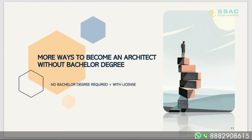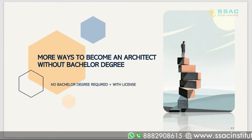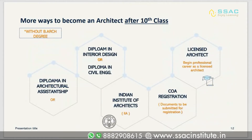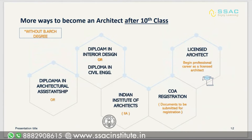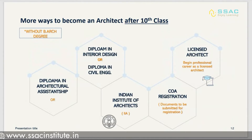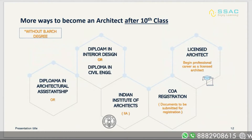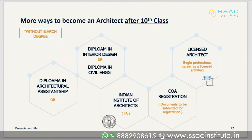There are more ways to become an architect without a bachelor degree. After 10th class, you can do a Diploma in Architectural Assistantship, Interior Design, or Civil Engineering. After completing any one of these diplomas, you register with IIA — Indian Institute of Architects — and then complete your COA registration, through which you can become a licensed architect and begin your professional career.